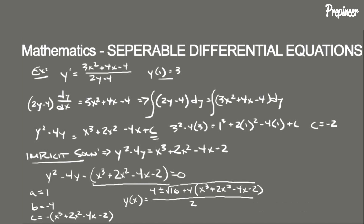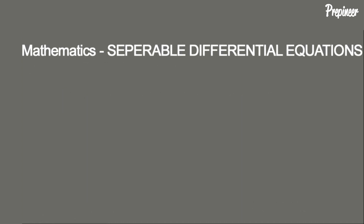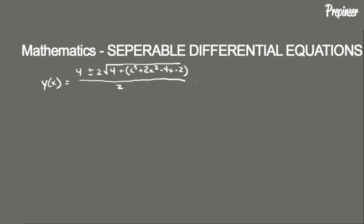We can factor a 4 out from under the square root, which comes out as a 2. Starting with a clean page and simplifying, we get y(x) equal to 4 plus or minus 2 times the square root of (4 plus x cubed plus 2x squared minus 4x minus 2), all divided by 2. This simplifies to y(x) equal to 2 plus or minus the square root of (x cubed plus 2x squared minus 4x plus 2).